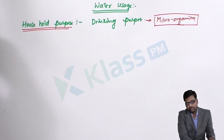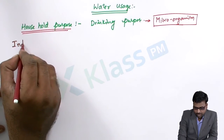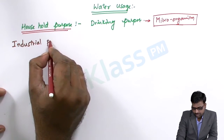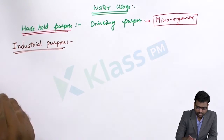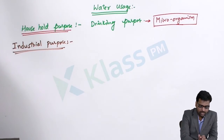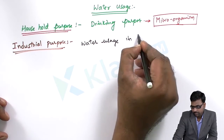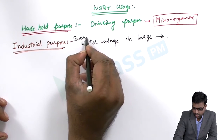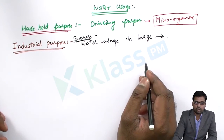The next purpose of water is industrial use, which is most important. As engineers we should know what type of water is used in various industries. Most beverage companies have large water usage, and for beverage companies the water should not contain microorganisms, or those microorganisms should be eliminated.